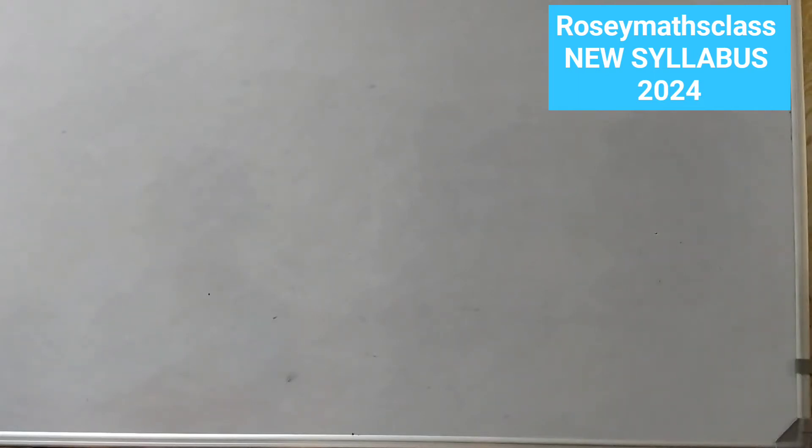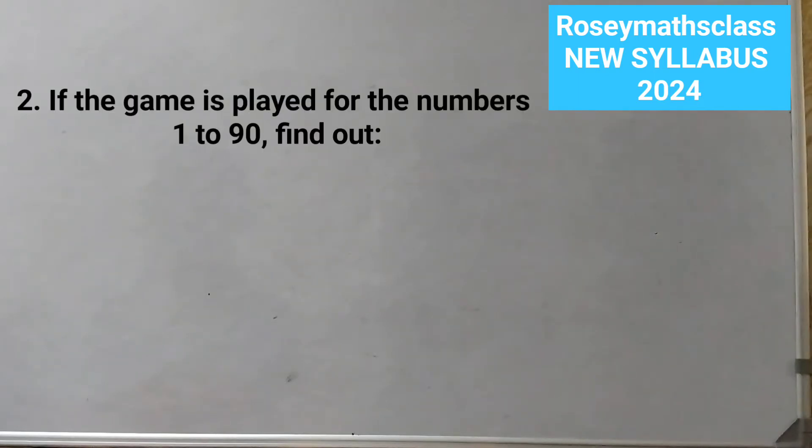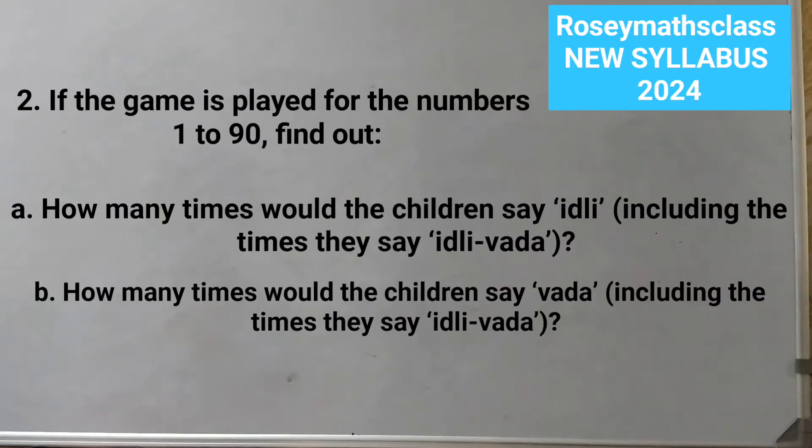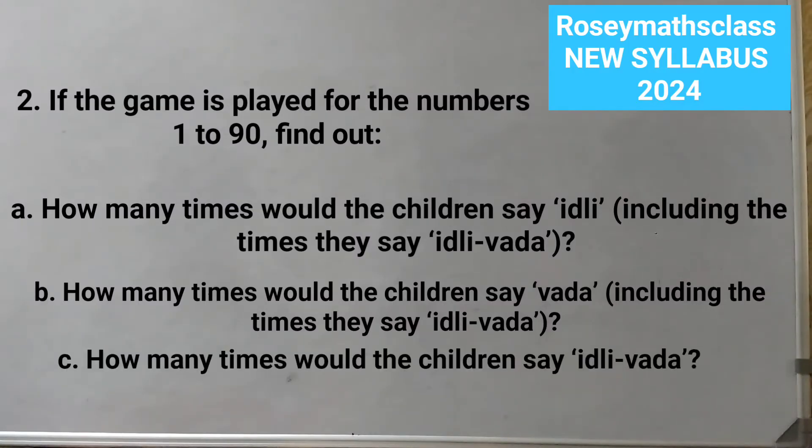I'll just read out the question first. If the game is played for the numbers 1 to 90, find out how many times would the children say Idli including the times they say Idli Vada, how many times they would say Vada, and how many times they would say Idli Vada. Let's solve this.